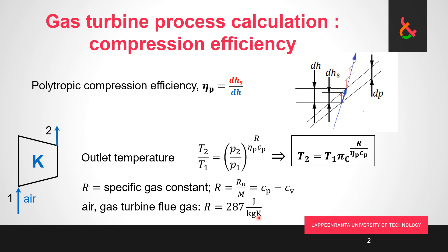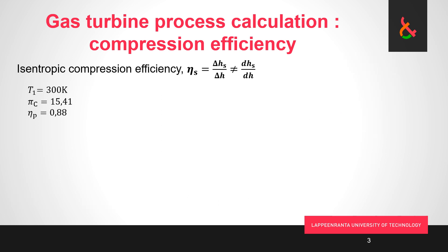This definition of the polytropic efficiency sounds awfully similar to isentropic. So how much do they actually differ? We can figure that out with an example. We take a compressor that's taking air at 300 Kelvin. Compression efficiency is 0.88 and our pressure ratio is 15.41.